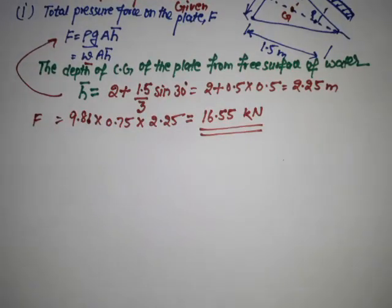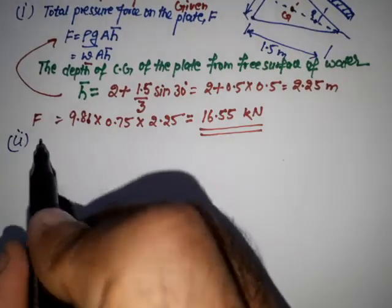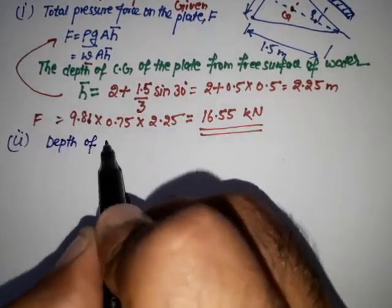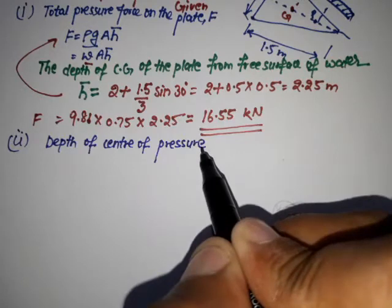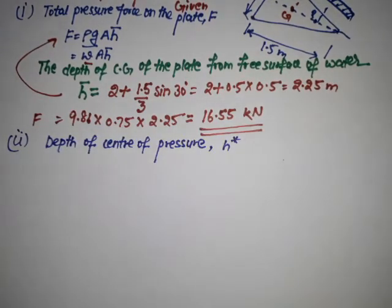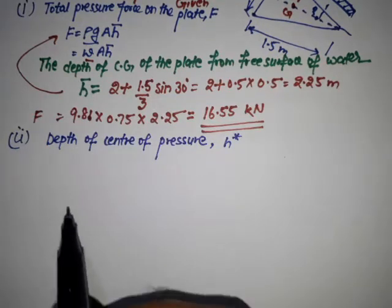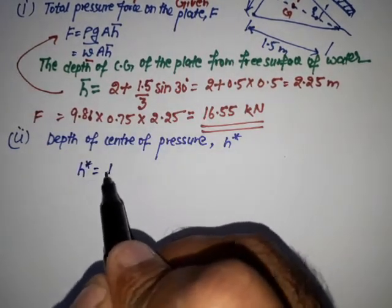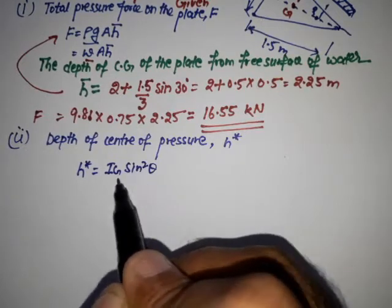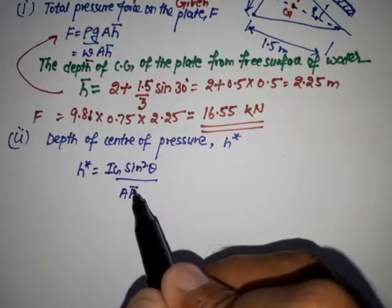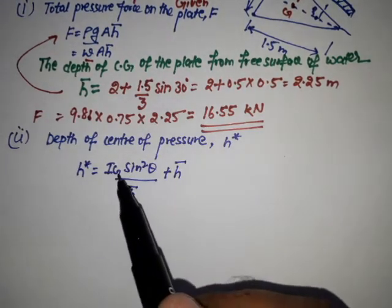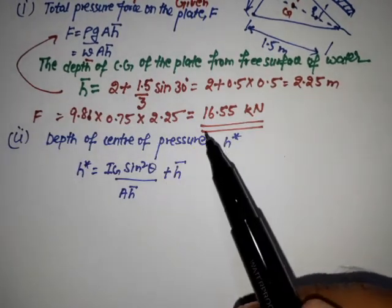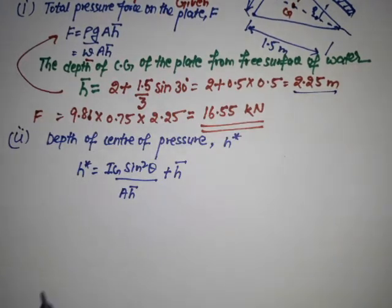Now we need to find the second part: the depth of the center of pressure, h-star. For an inclined plane surface, h* = (IG × sin²θ) / (A × h̄) + h̄. There is only one unknown here — IG — since theta is given, area is calculated, and h̄ = 2.25 meters.